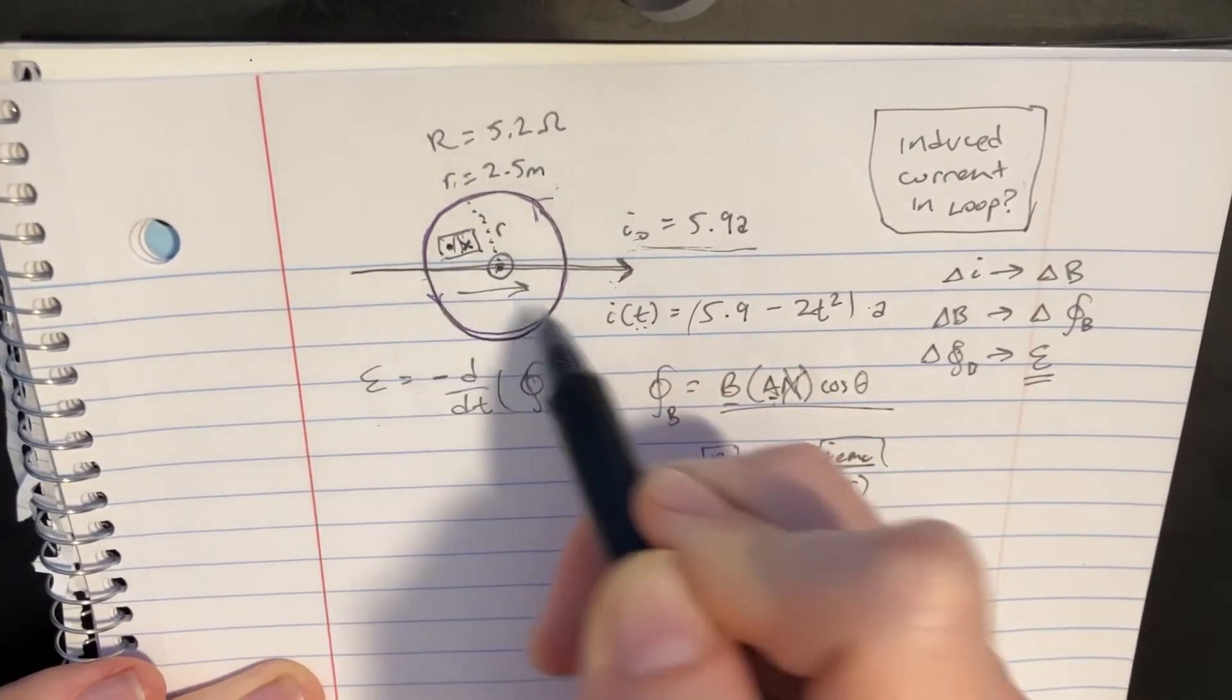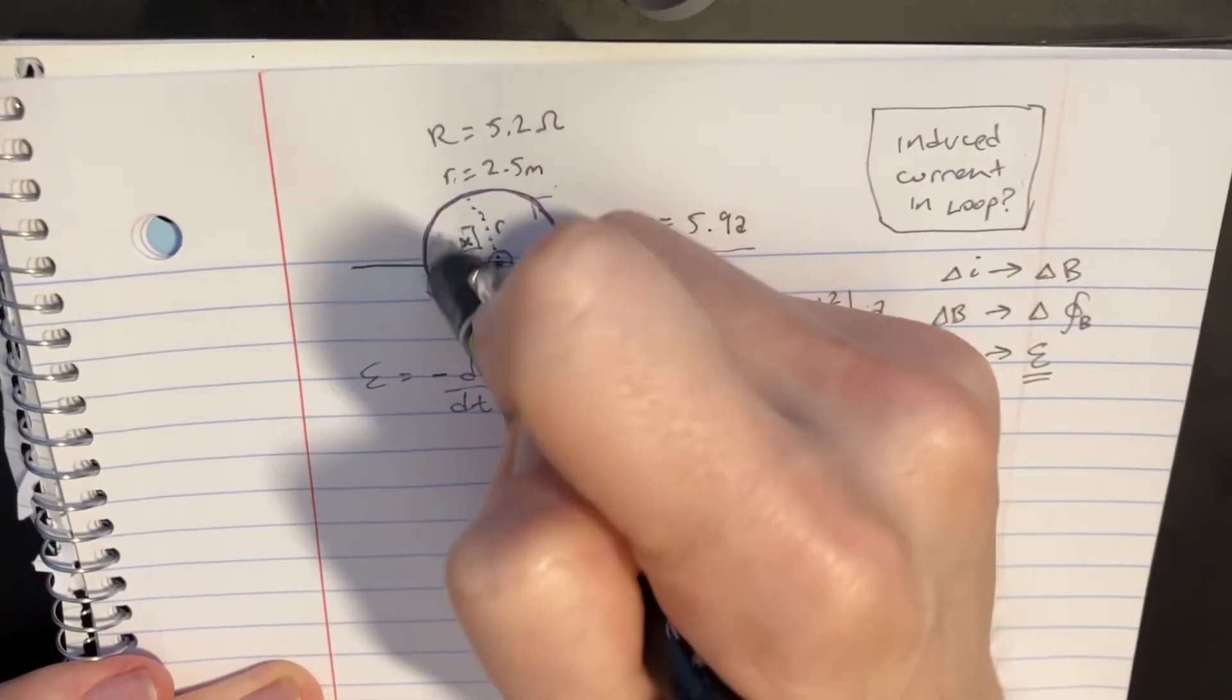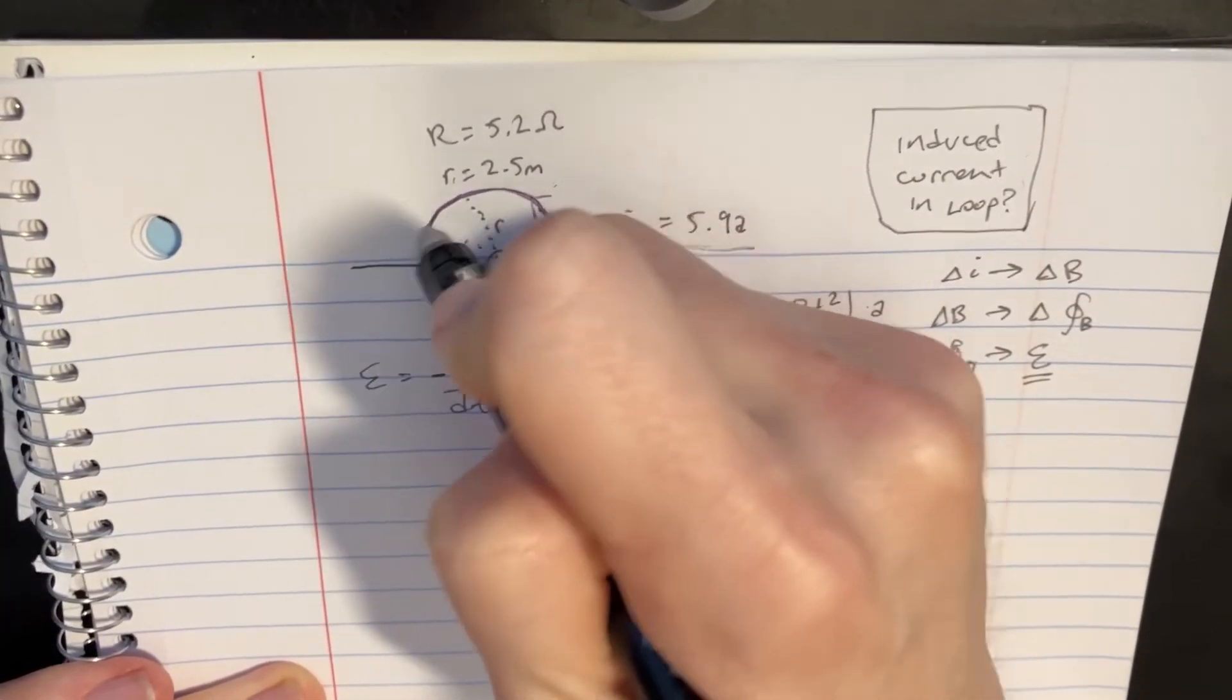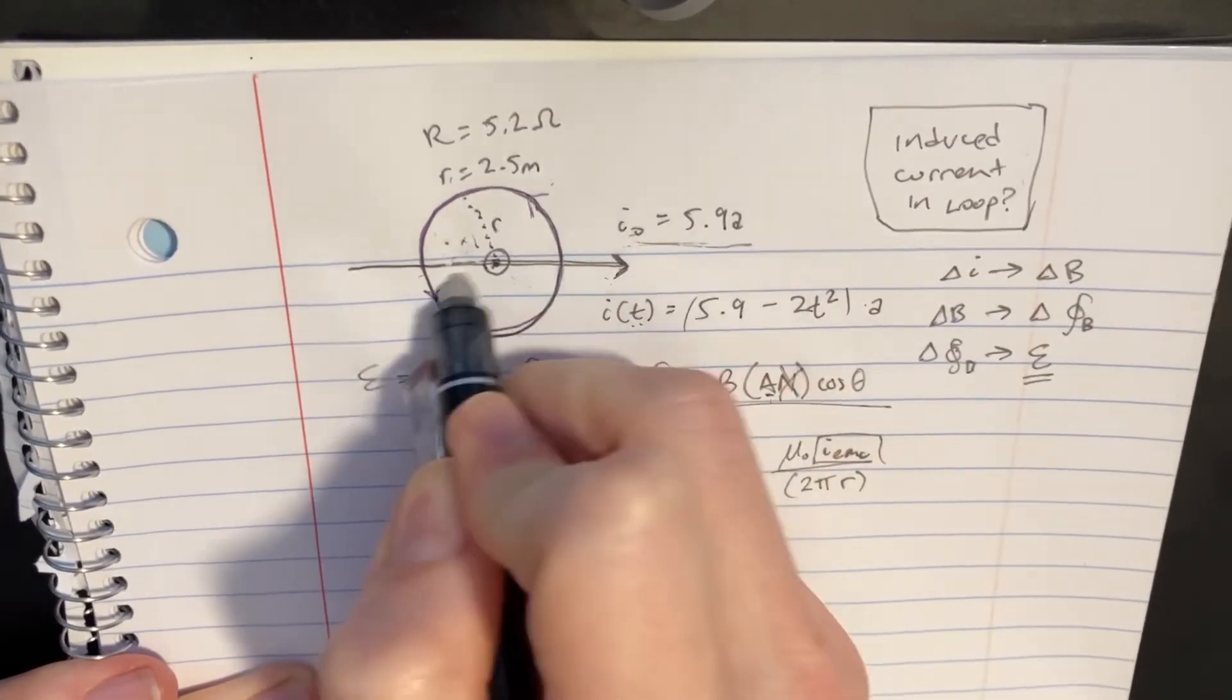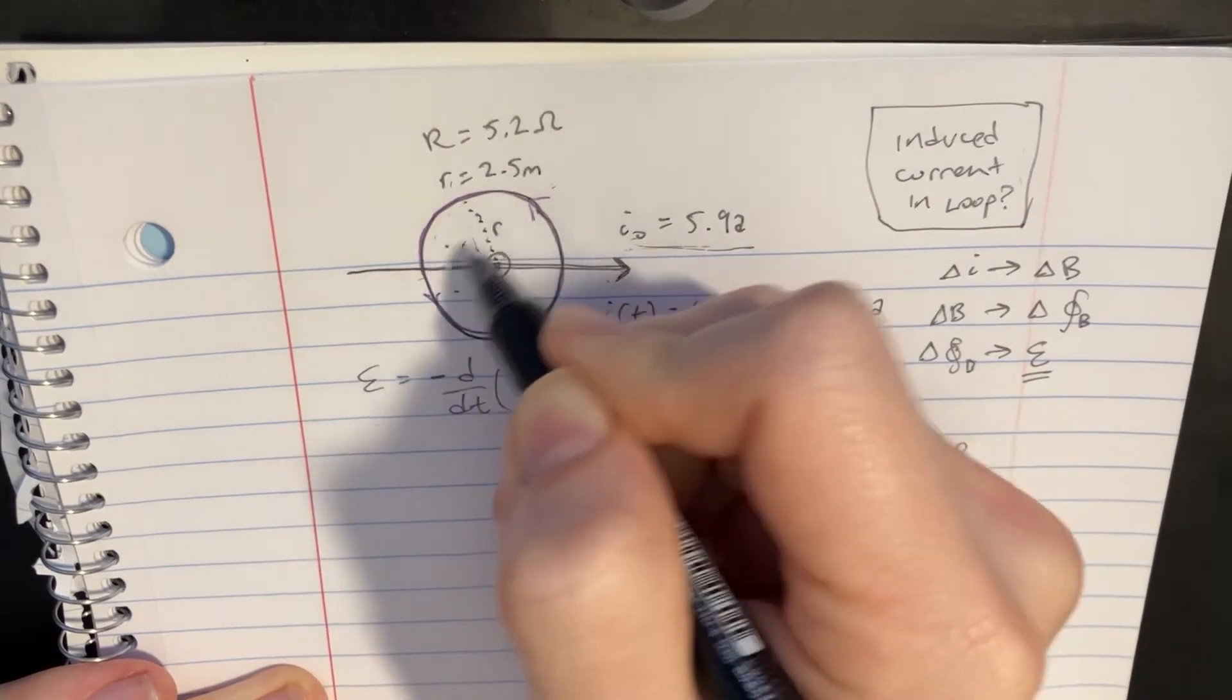So it's not going out of the page. It's not going into the page, which means it's not going to contribute any current to the Amperian loop. So we can actually just get rid of the currents in here. The current would be 0 inside of this Amperian loop.